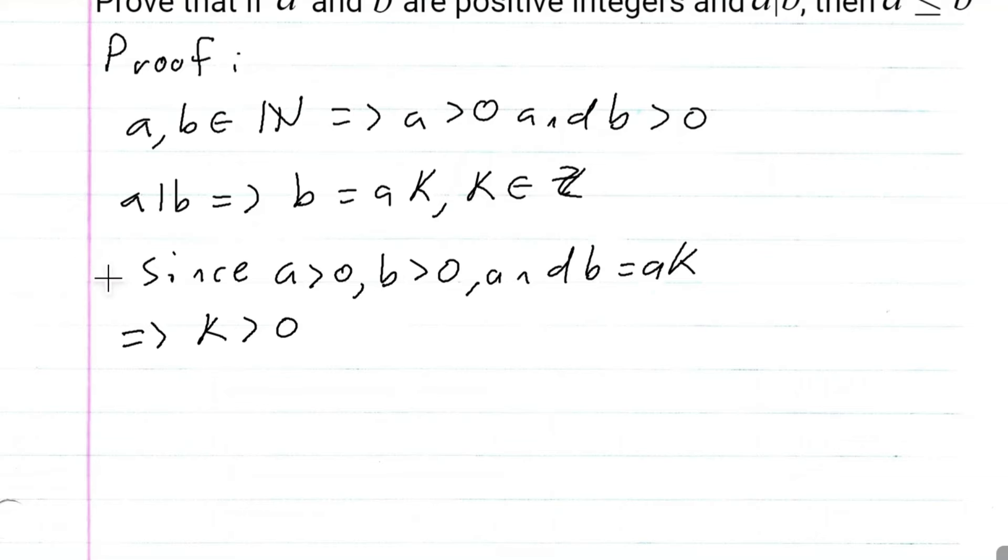So this means that B must be bigger than or equal to A. And B must be greater than or equal to K. Since B is equal to the product of those two things, that means B must be greater than or equal to each individual one.